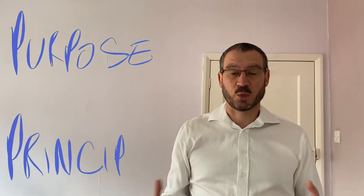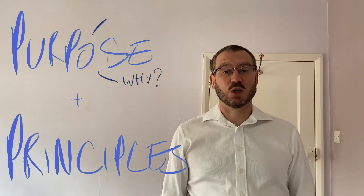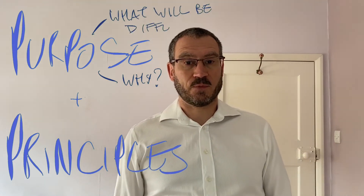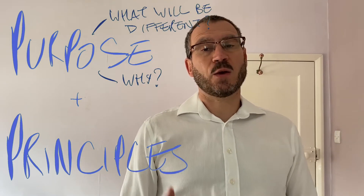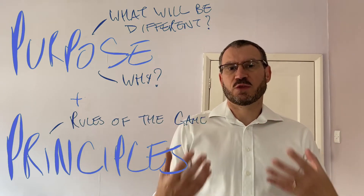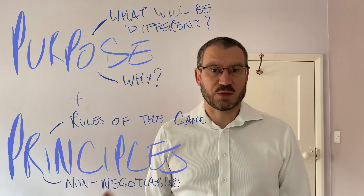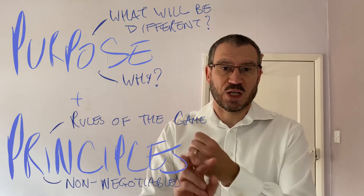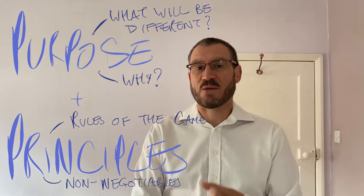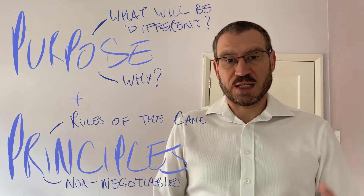The first step in the natural planning model — the top layer, if you like — is purpose and principles. We start with why. Why are we doing this thing? What's going to be different in the world when we're finished? And alongside our purpose, we articulate any rules of the game, any non-negotiables, any things that have to be involved in the delivery of this project. So that might be budget, it might be location, it might be people who have to be involved, or a certain number of requirements that need to be included.